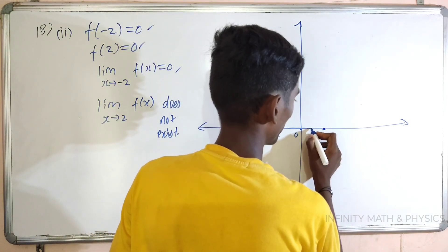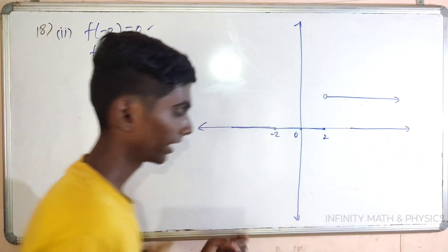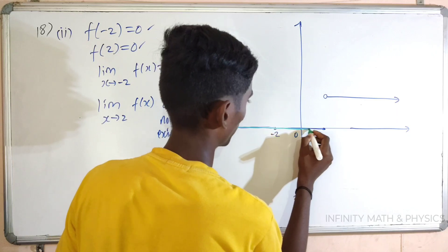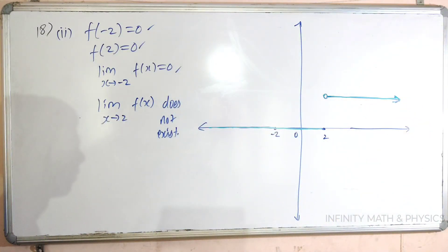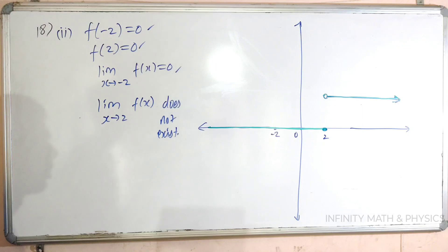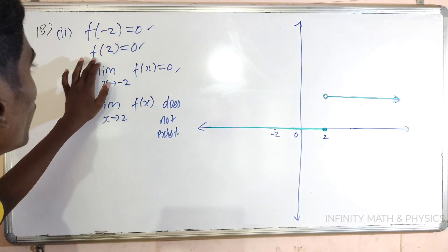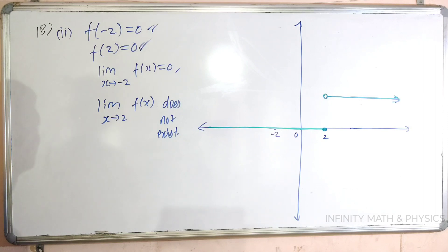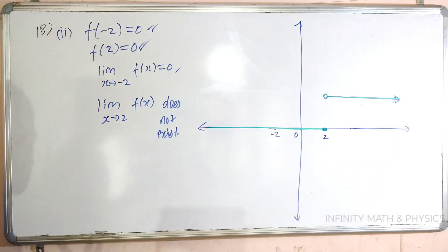How do you think about the function? If you look at the function, you will have a different color mark. f of minus 2 is equal to 0 — defined. Next, f of 2 is equal to 0 — defined. Limit when x tends to minus 2, f of x is equal to 0. If you look at the left side and right side, the limit is 0 — this is true.